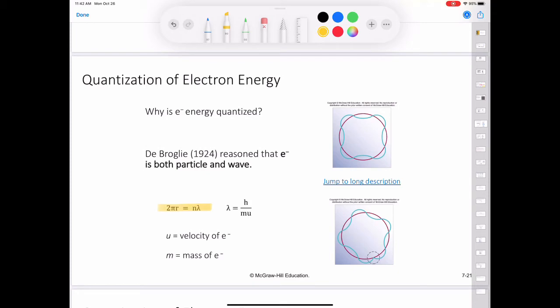De Broglie's reasoning led to the conclusion that waves can behave like particles and particles can exhibit wave-like properties. De Broglie deduced that the particle and wave properties are related by the expression shown here. Where λ, m, and u are the wavelengths in meters associated with the moving particle, its mass in kilograms,